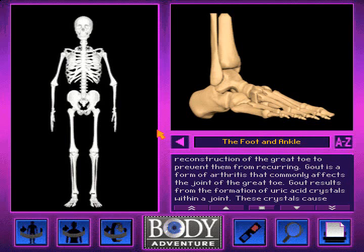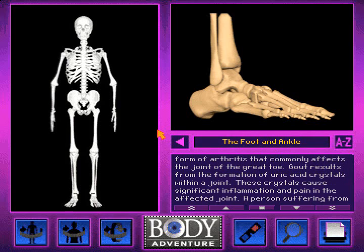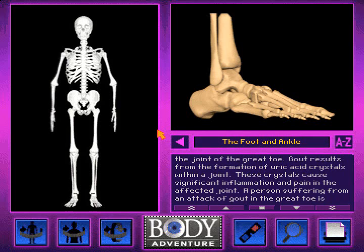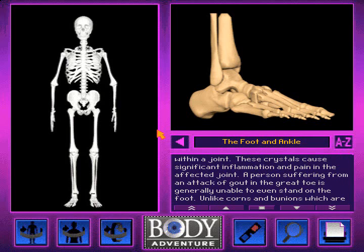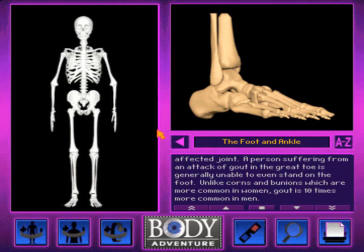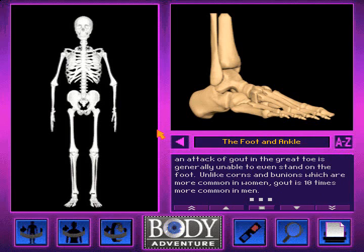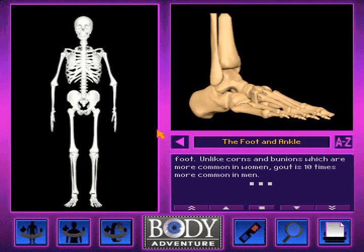Gout is a form of arthritis that commonly affects the joint of the great toe. Gout results from the formation of uric acid crystals within a joint. These crystals cause significant inflammation and pain in the affected joint. A person suffering from an attack of gout in the great toe is generally unable to even stand on the foot. Unlike corns and bunions, which are more common in women, gout is 10 times more common in men.